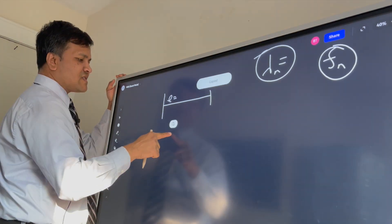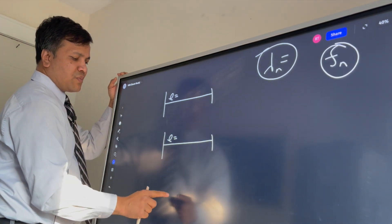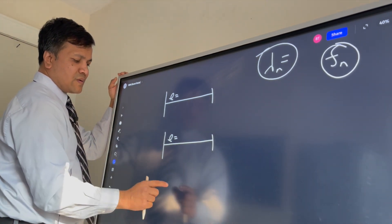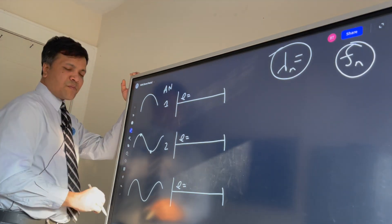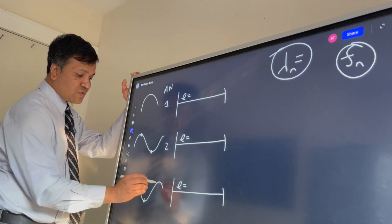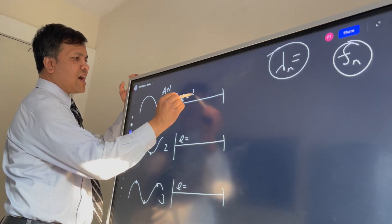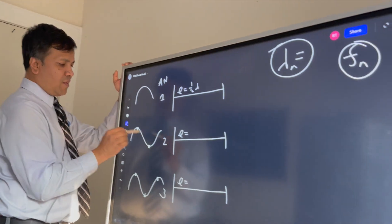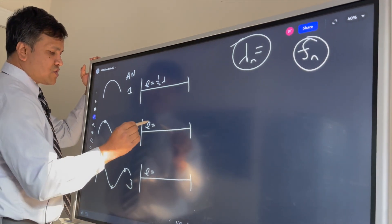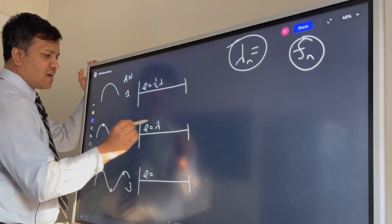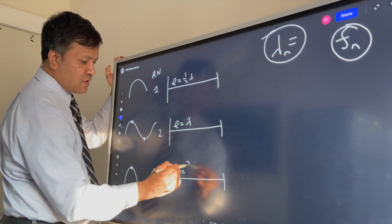Let's consider a guitar — I'll show it three times for the first, second, and third harmonics. For the first harmonic, the wavelength is half lambda. For the second harmonic, it's one full wavelength. For the third harmonic, it's three-halves lambda.